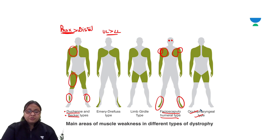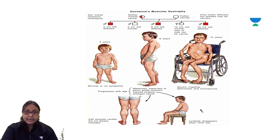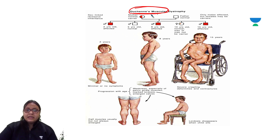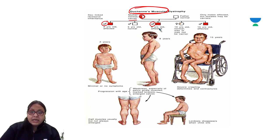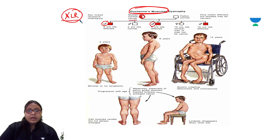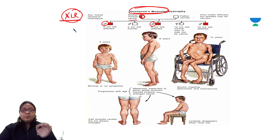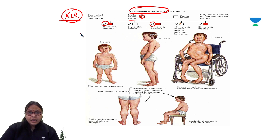Today we'll discuss in detail Duchenne and Becker's type of muscle weakness, myotonia dystrophica, and facioscapulohumeral type. Looking at the pedigree for Duchenne muscular dystrophy: the mother is a carrier, the father is normal, and it is only affecting the males. That means it is an X-linked recessive disease. It mainly affects males, and the first decade of life is mostly affected.